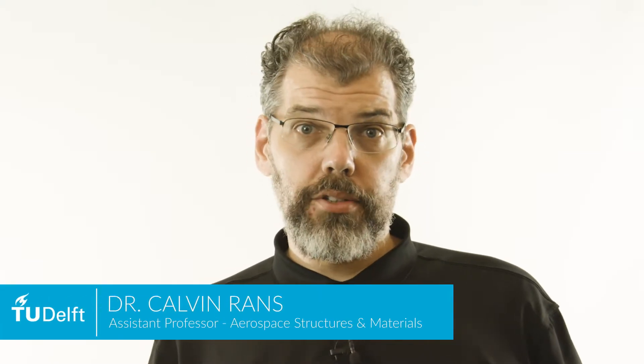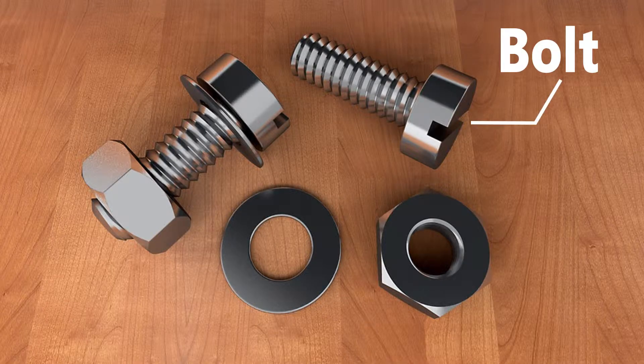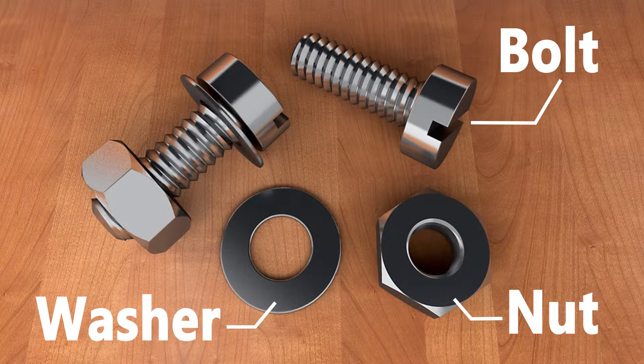When we talk about threaded fasteners, what we are actually referring to is an assembly of parts that work together. These parts are the bolt, the nut, and in some cases, a set of washers.